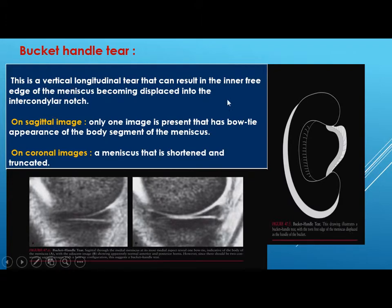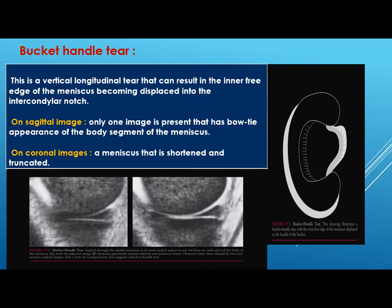A bucket handle tear is a vertical longitudinal tear that can result in the inner surface of the meniscus becoming displaced into the intercondylar notch. On sagittal image, only one image is present with a bow-tie appearance of the body segment of the meniscus. With 4 to 5 millimeter slice thickness you should see two bow-tie appearances — if you see only one, this is suggestive of a bucket handle tear.